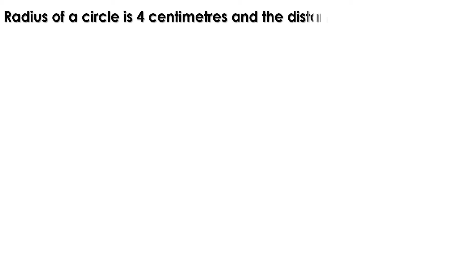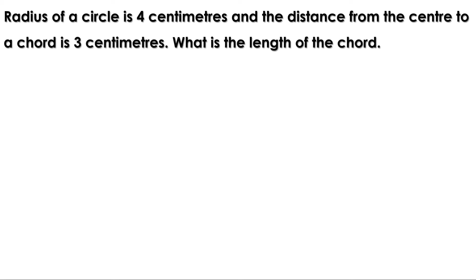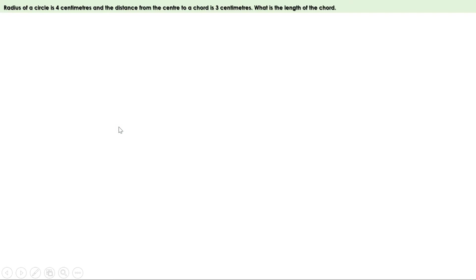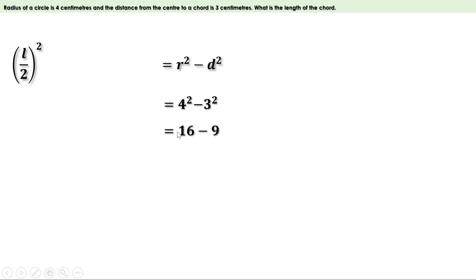Problem: The radius of a circle is 4 centimeters and the distance from the center to a chord is 3 centimeters. What is the length of the chord? Here r = 4 cm and d = 3 cm. We know (l/2)² = r² − d² = 4² − 3² = 16 − 9 = 7. So l/2 = √7, therefore the length of the chord is 2√7 centimeters.